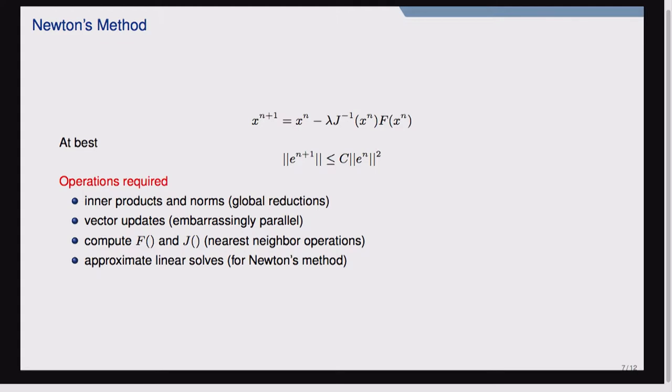Finally, there's Newton's method, where you update the solution by evaluating your current function, linearizing and solving with the Jacobian — possibly with damping or a line search. In the best case you get quadratic convergence: the new error norm is less than some constant times the previous error norm squared. If your current error is 10 to the minus 3 and you take one step in the quadratically converging region, your next error is 10 to the minus 6; one more step, 10 to the minus 12.